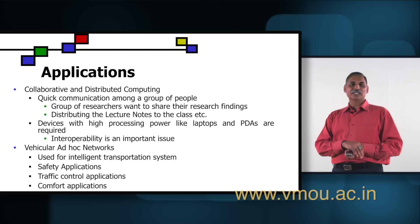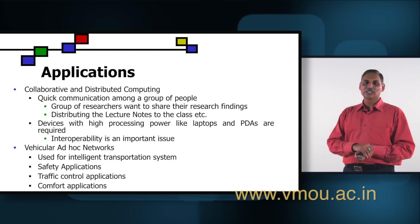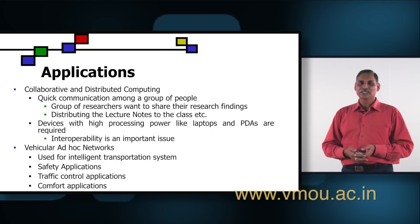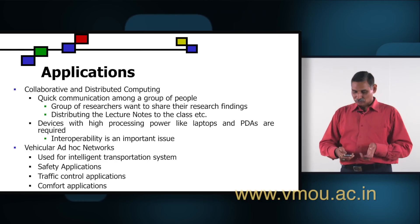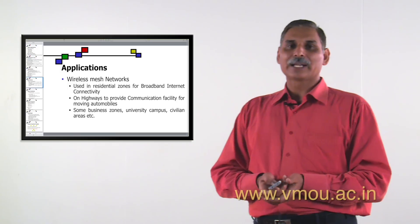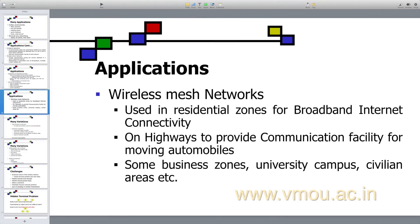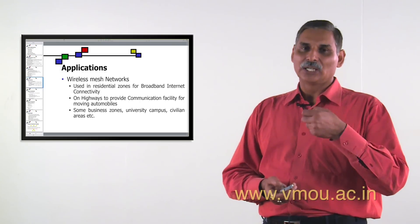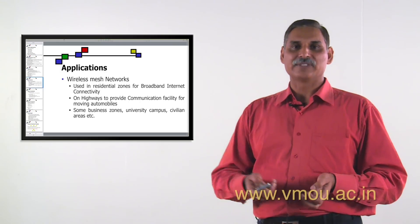Another important application is vehicular ad hoc networks, used for intelligent transportation systems, safety applications, traffic control applications, and commercial applications, where the vehicles themselves act as devices. Another application is wireless mesh networks, used in residential zones or for broadband internet connectivity on highways for moving automobiles, business zones, university campuses, and civilian areas, where mesh connectivity is used among the wireless devices.